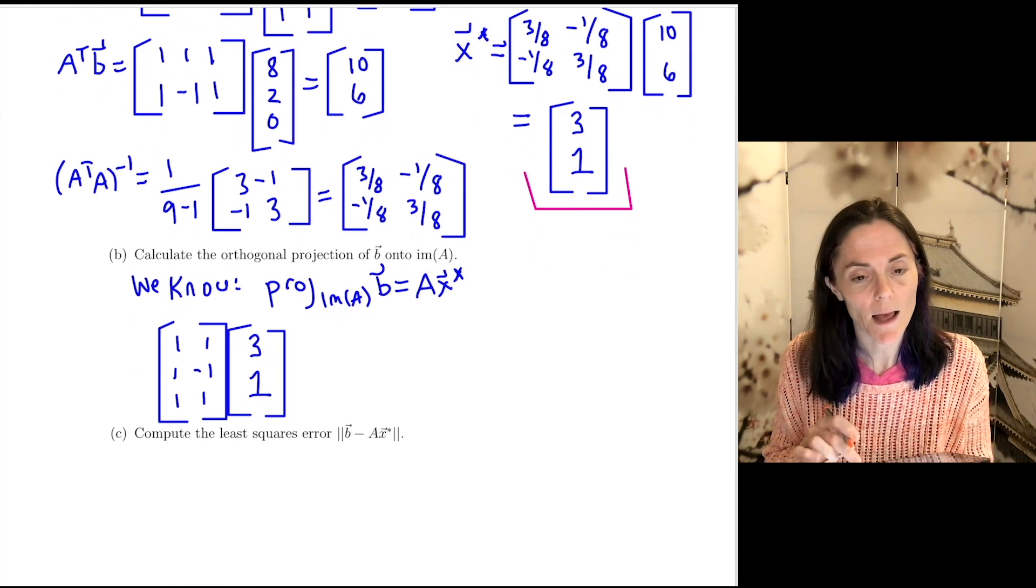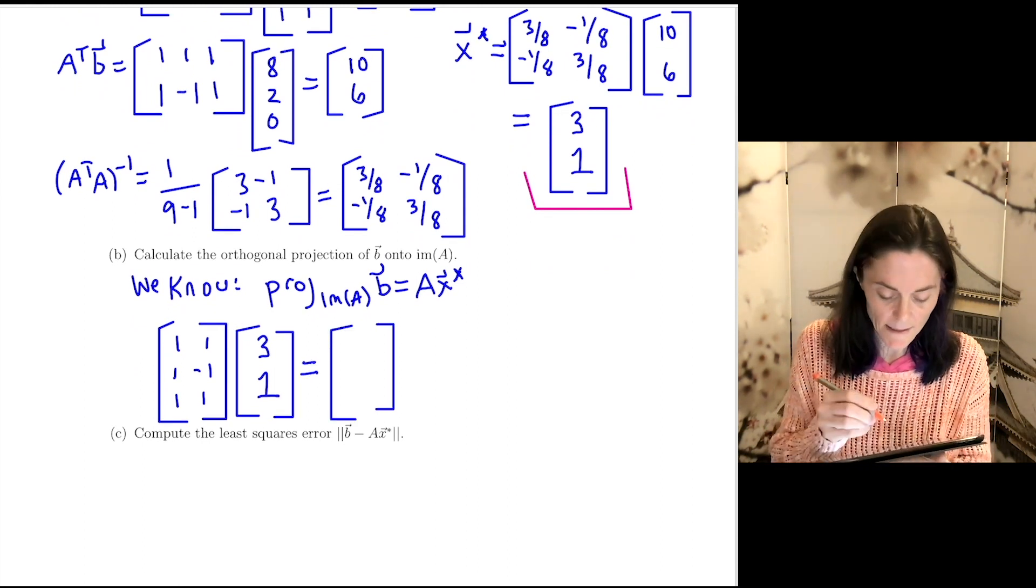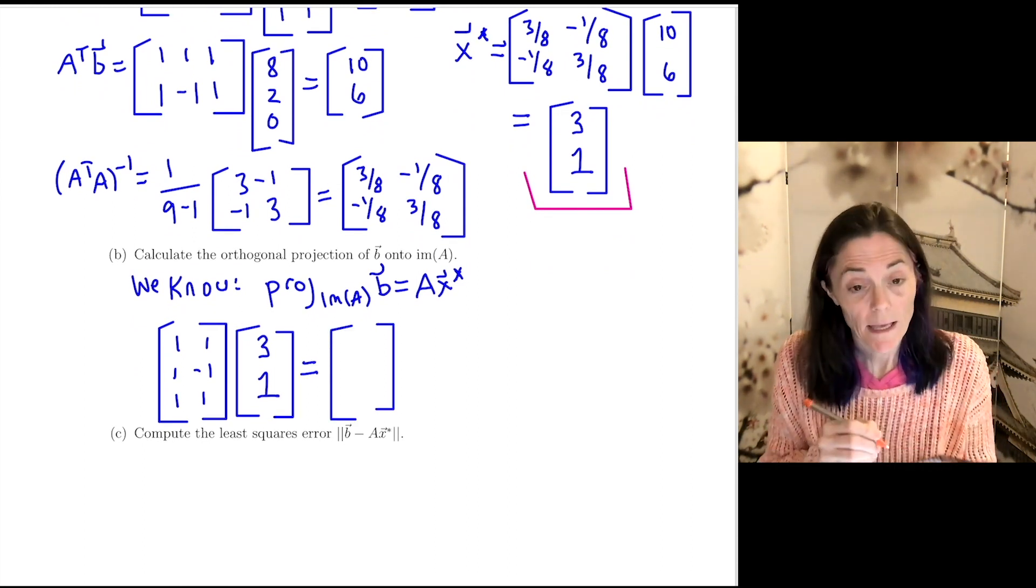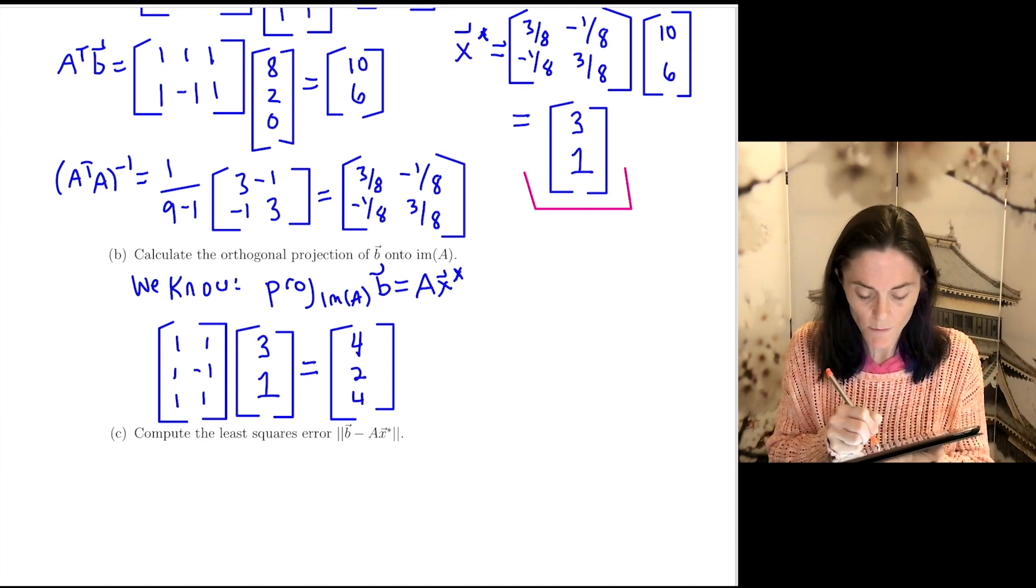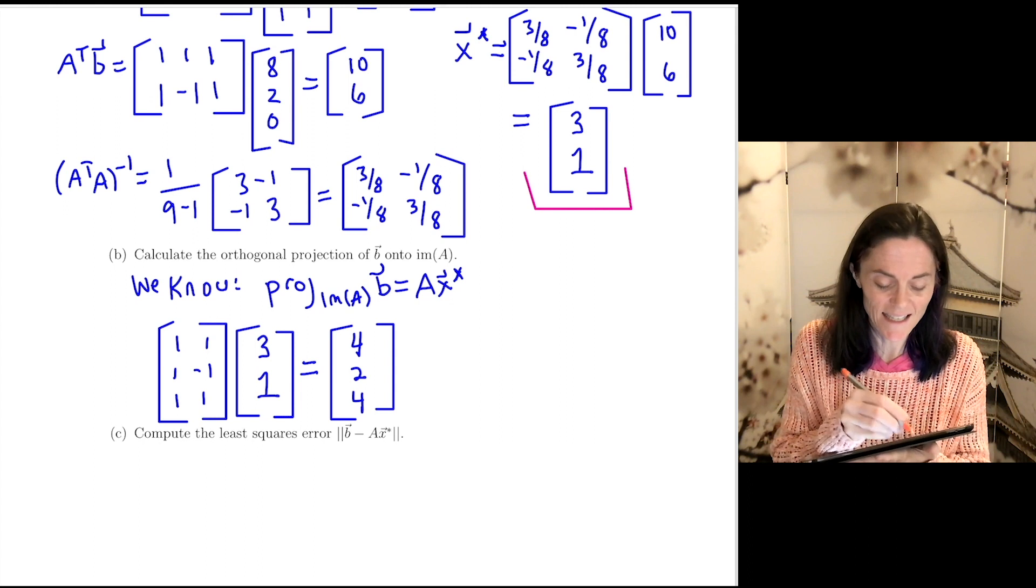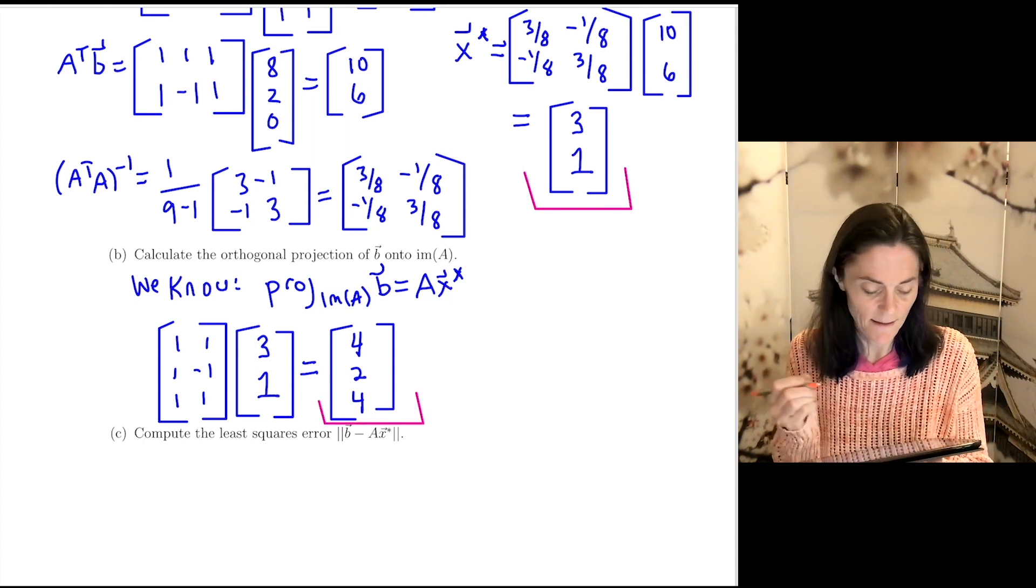And so I can just multiply matrix A. We take matrix A, which I can copy and paste. Here's matrix A times this vector. This is the projection. This is really where the least square solution comes from. So now let me scroll up. This vector, AX star, we get 4, 3 plus 1. We have 3 minus 1, and then 3 plus 1. So this is my projection. This is my answer in letter B.